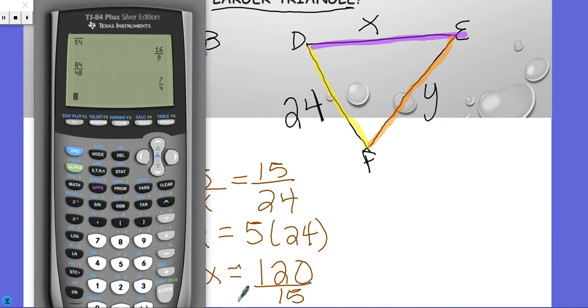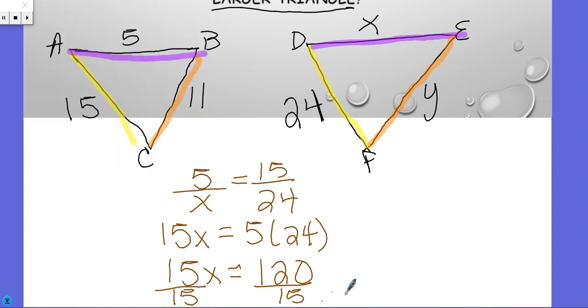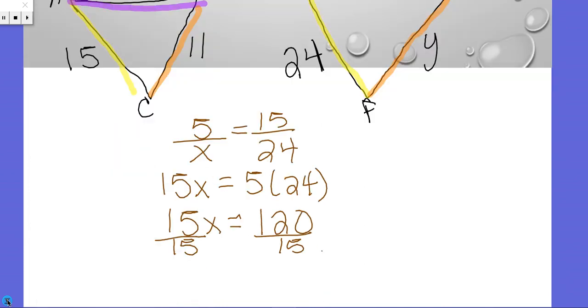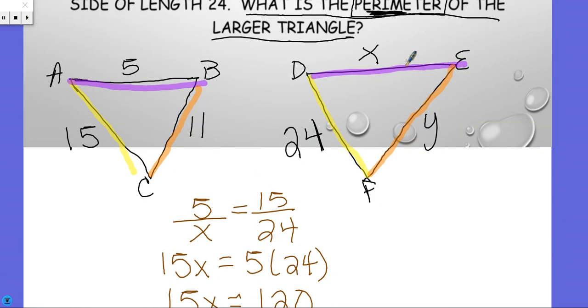Then we're going to divide by 15. I was trying to do this one in my head but it's taking me too long. 120 divided by 15 equals 8. So x equals 8.